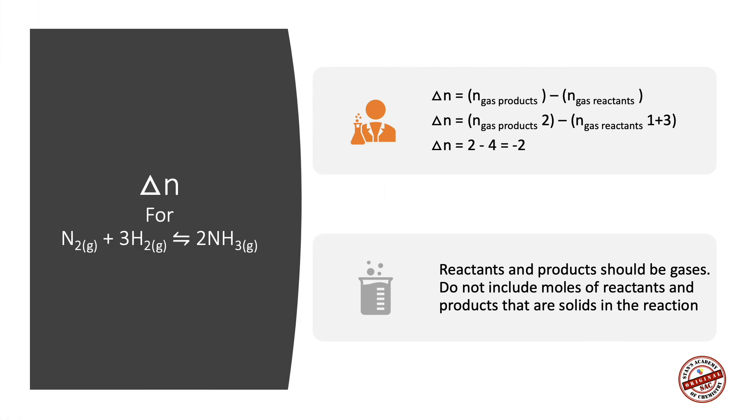This is how you calculate the value of delta N for the reaction N2 plus 3H2 giving you 2NH3, where all the reactants and products are gases. Delta N equals number of moles of gas products minus number of moles of the gas reactants. In this reaction, since all the reactants and products are gases, delta N equals number of moles of products, which is 2, minus number of moles of reactants, which is 1 plus 3, which is 4, or delta N equals minus 2. Make sure that you identify the nature of the reactants as only gases and do not include reactants which are solids.